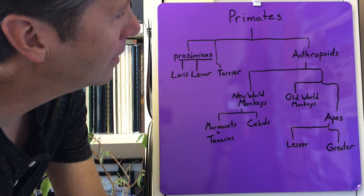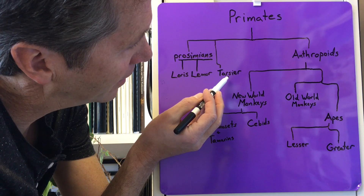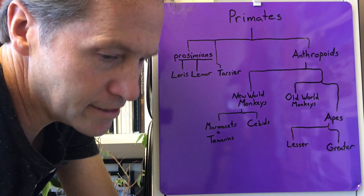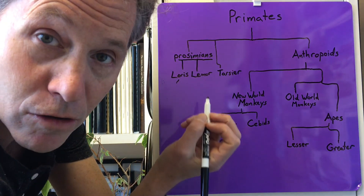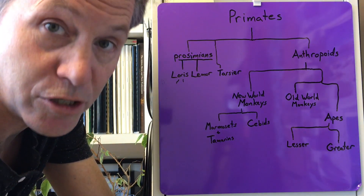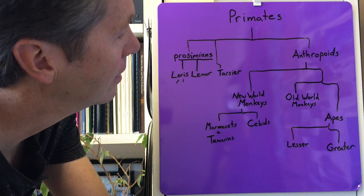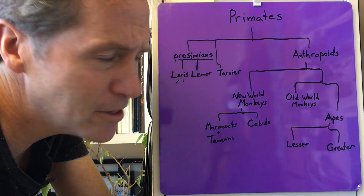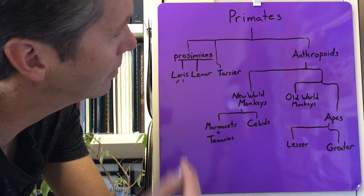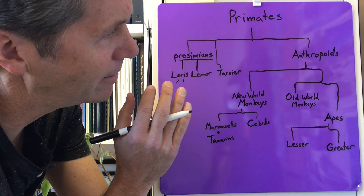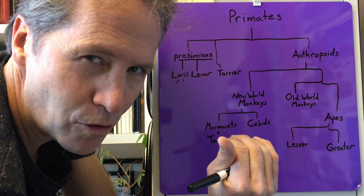More specifically, let's look at the prosimians first. There are really three: the loris, the lemur, and the tarsier. For the loris, good examples are the slow loris and the bush baby — the bush baby is probably the best example. The slow loris is sometimes also called the slender loris. You find those a lot in Africa and into equatorial old world areas.